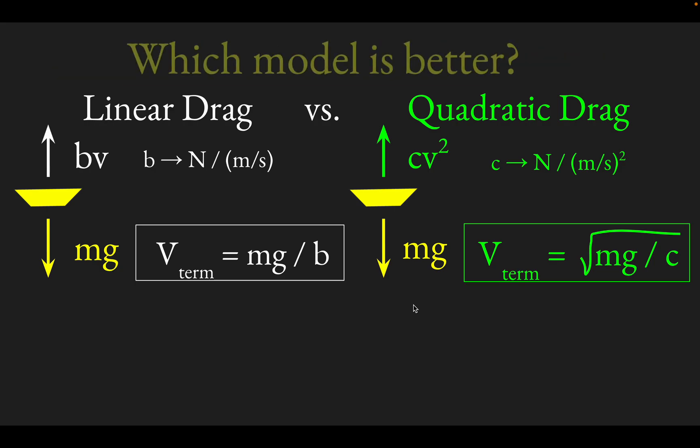The big question is, which model is better? How do you tell which one's going to be better? What's often done is you adjust the mass of the falling coffee filter just by adding more coffee filters. So you end up adjusting the mass without adjusting the shape by doubling the coffee filters or putting three of them in a stack.